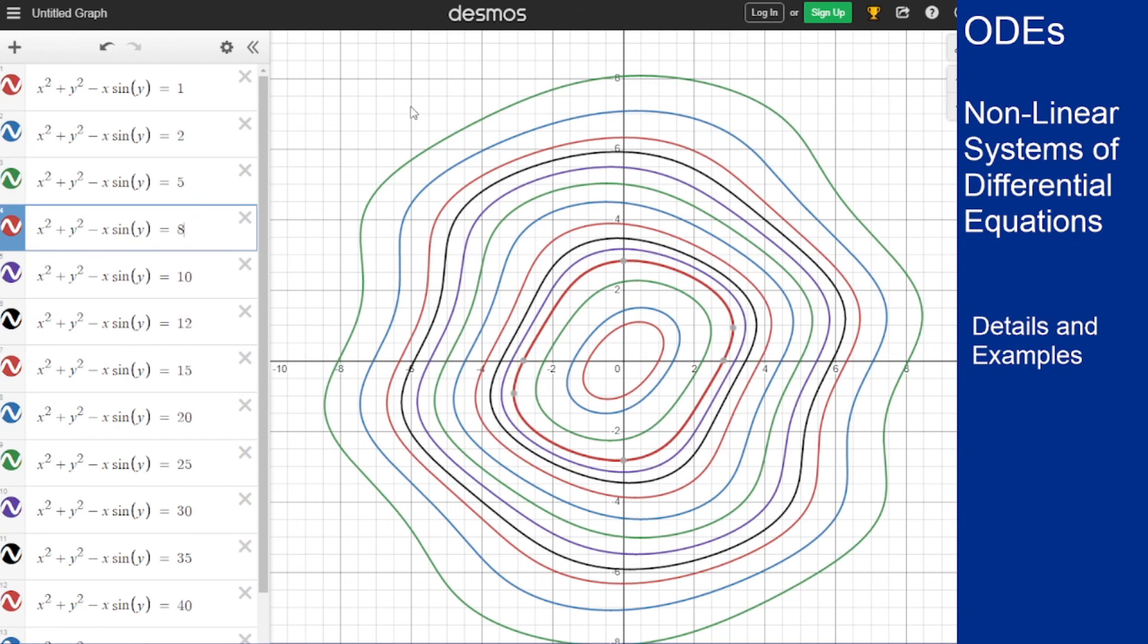It's not quite an ellipse, it's sort of a weird wobbly shape the further out you go, but that's the change you get from the non-linearity of this system. You don't get nice simple ellipses anymore, you get some weird wobbly shapes because things are non-linear. That changes how things look.